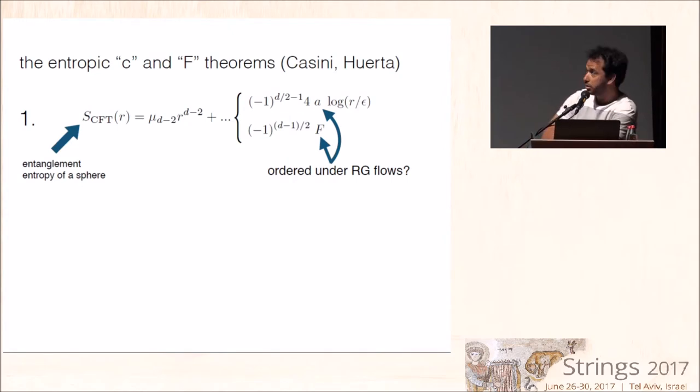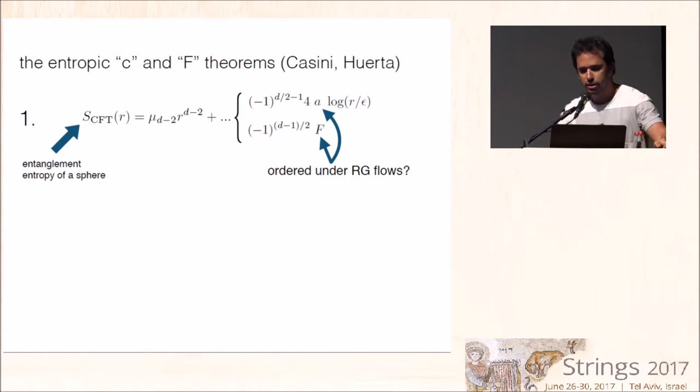I will start mentioning these known results about the C and F theorems due to Casini and Huerta, which is based on two main things. The first one of which is that the universal piece of the entanglement entropy of a sphere in a CFT is believed to be ordered under RG flows. So the entanglement entropy is a very sweet approach to these RG flow irreversibility theorems.